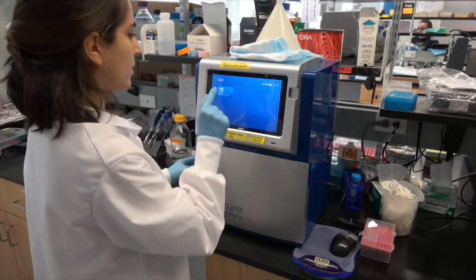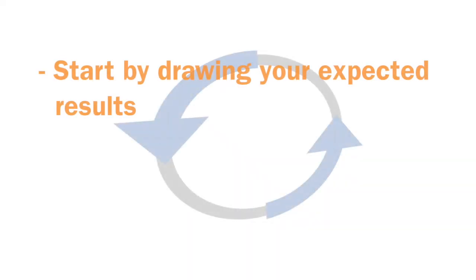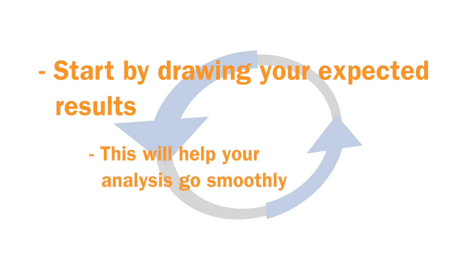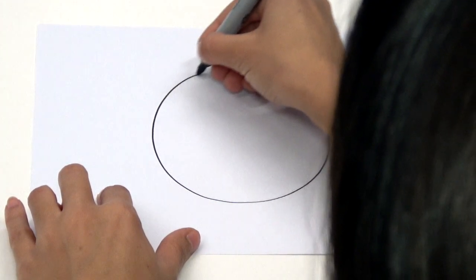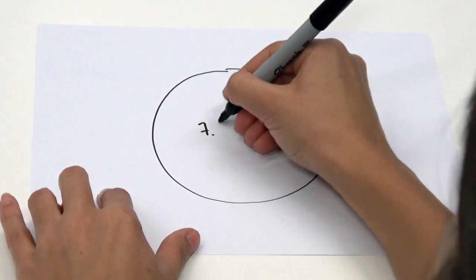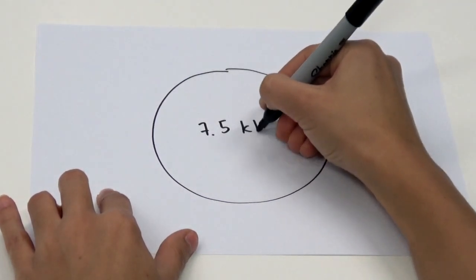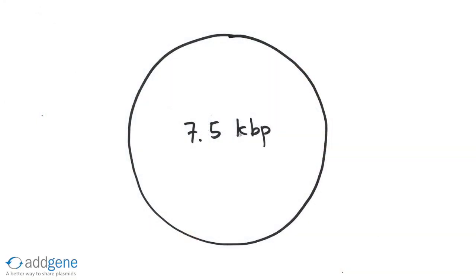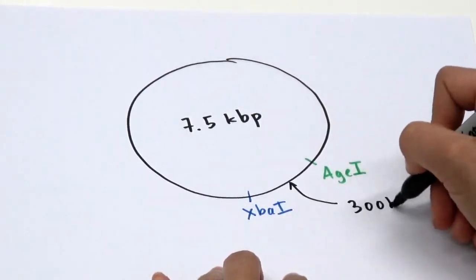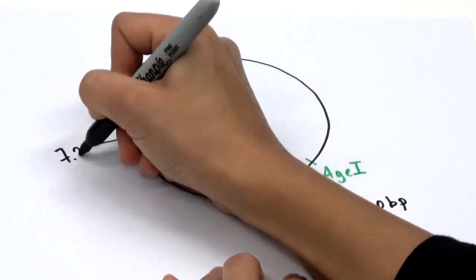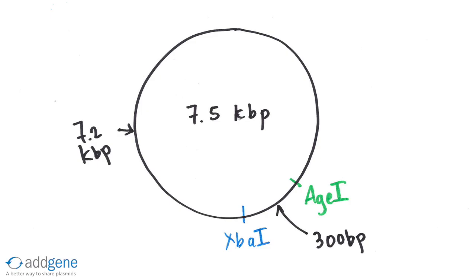Now let's start our analysis. The first thing you should do is draw out your expected results. While this step may seem unnecessary, it's good practice and it will make your analysis go a lot faster. In this exercise we would like to verify the identity of a plasmid we received from Addgene. We'll digest the 7.5 kilobase pair plasmid individually with either AGE1 or EXPA1, which are both single cutters, and then with AGE1 and EXPA1 together.